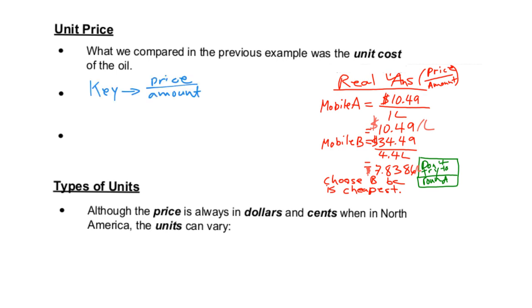The key idea for this whole thing is to do price divided by amount for each item. We compare the unit prices and always take the lower one.